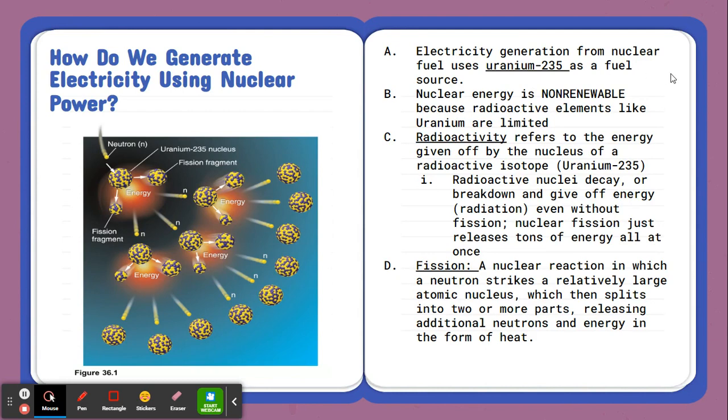Well, our fuel source in this case is known as uranium-235. This is a radioactive substance. It is non-renewable because it takes millions of years for that uranium fuel to form. Now, the radioactivity of our uranium-235 actually refers to the energy that is given off by the nucleus of our U-235.